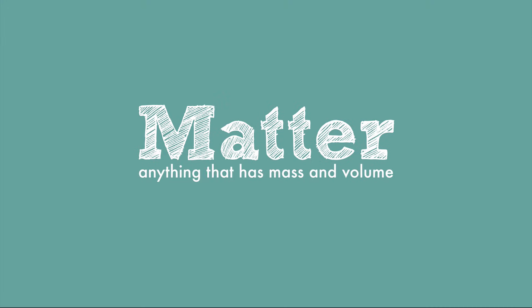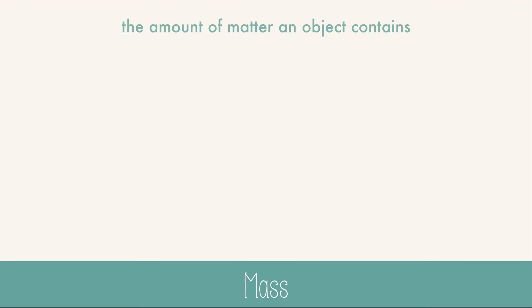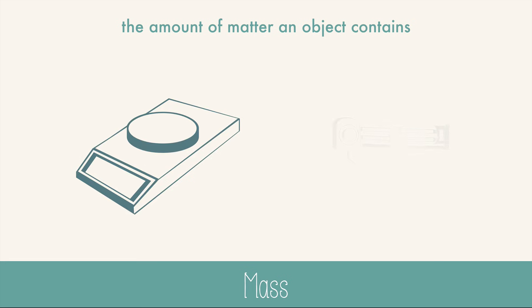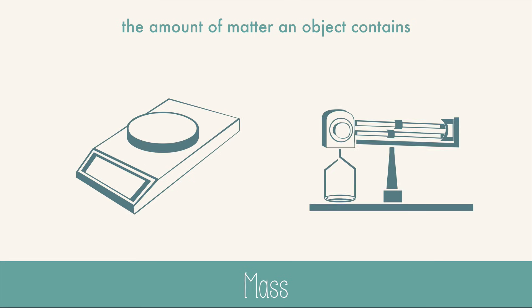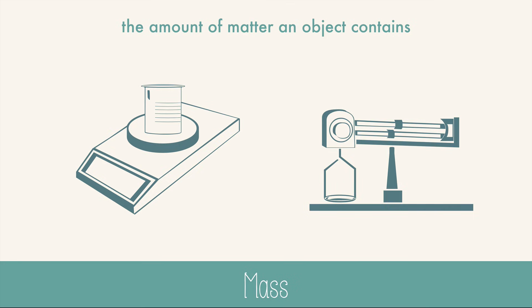Let's make sure we know what mass and volume are. Mass is the amount of matter an object contains. We can measure mass with an electronic or an analog balance. Technically that's measuring weight, which is actually gravity's pull on mass, but it's the quickest way to measure mass on planet Earth, which is where most people do chemistry.